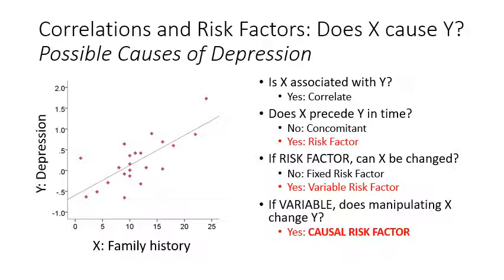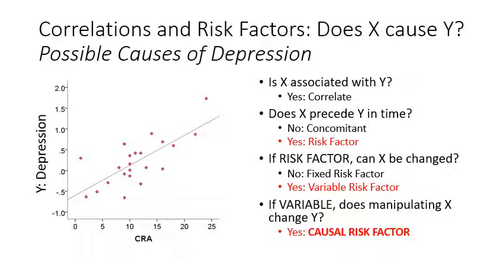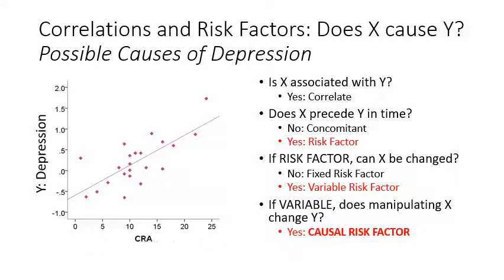Family history contributes to depression, but for most of us it's in the past and can't be changed. Substance abuse is interesting: if it came first, it may be a risk factor — and since a person can get out of addiction, it could be a causal risk factor if removing it changes the depression. Sleep disturbance is actively debated — which causes which? Social ostracism and early puberty are also linked. We can consider all of these as possible causal risk factors in relation to depression.